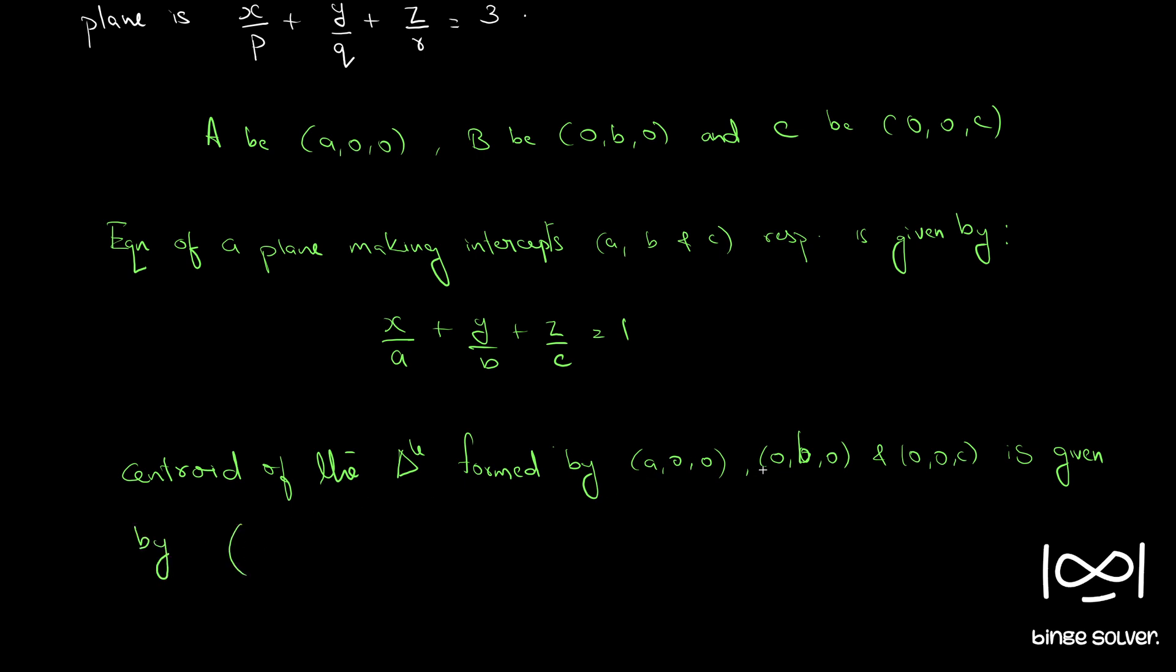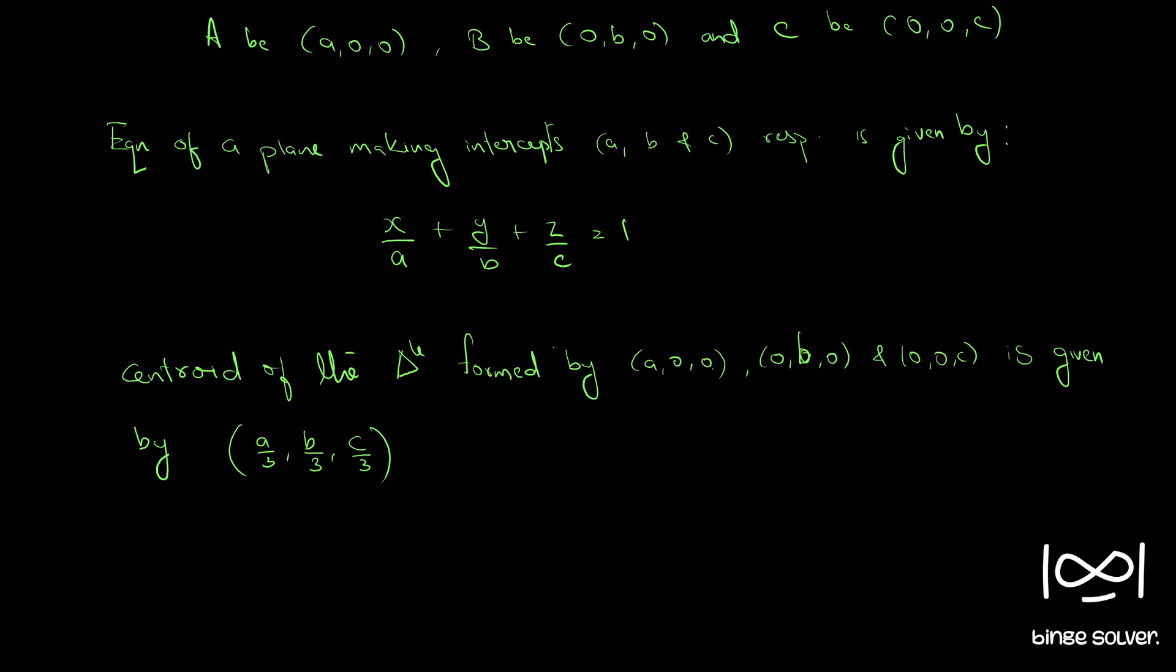by (a/3, b/3, c/3). So, how we got this centroid is discussed in the concept video that I did for analytic geometry. So you can check that out if you are unfamiliar with this formula. So, a/3, b/3, and c/3.